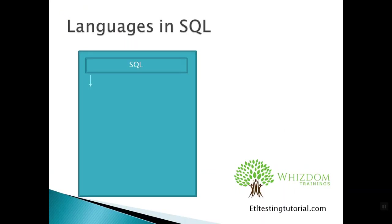The first language is DDL — Data Definition Language. It is used to define the data. The second language is DML — Data Manipulation Language. It is used to modify the data, or if we want to make some changes within our database, we can use the commands of DML.